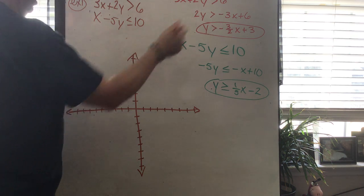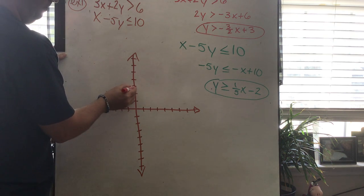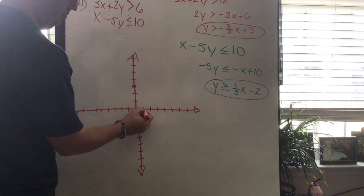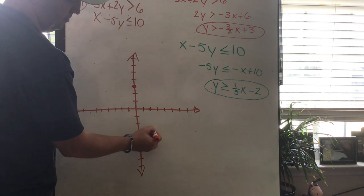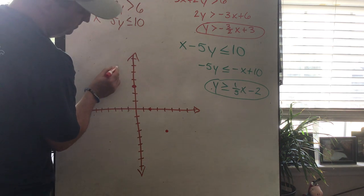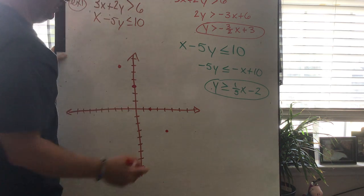So this is the key part here, graphing the system of inequalities. So the red one, we're gonna start at 3, right? It's gonna go down 3 and over 2, like this, down 3 and over 2, like this, or up 3 and back 2, whatever the case may be.